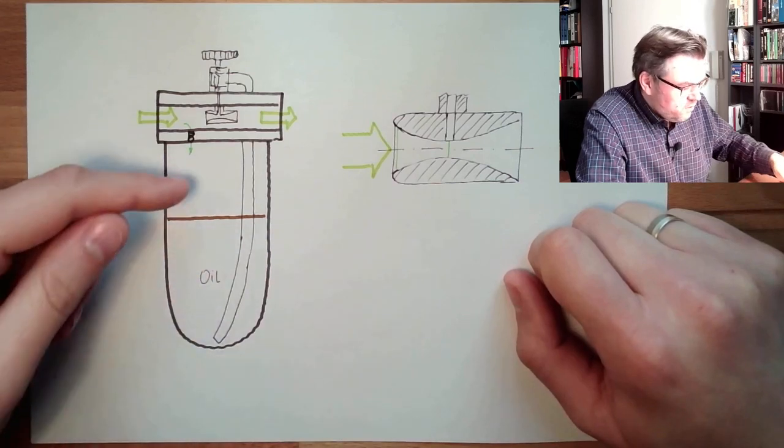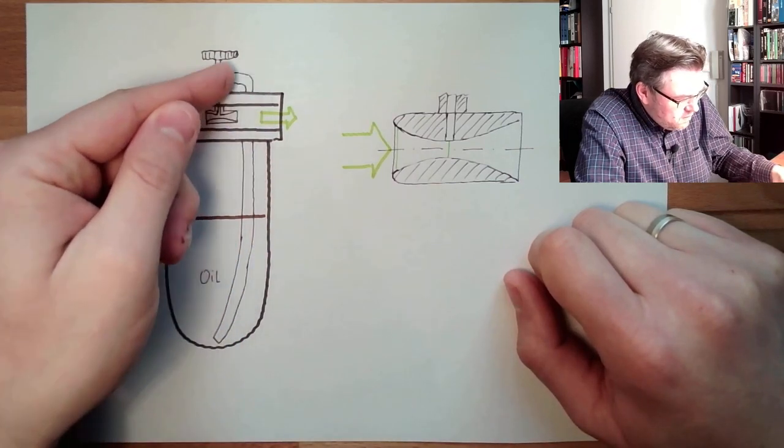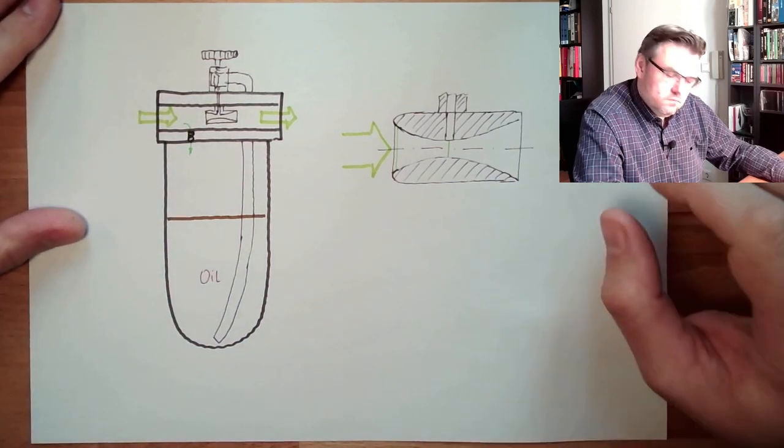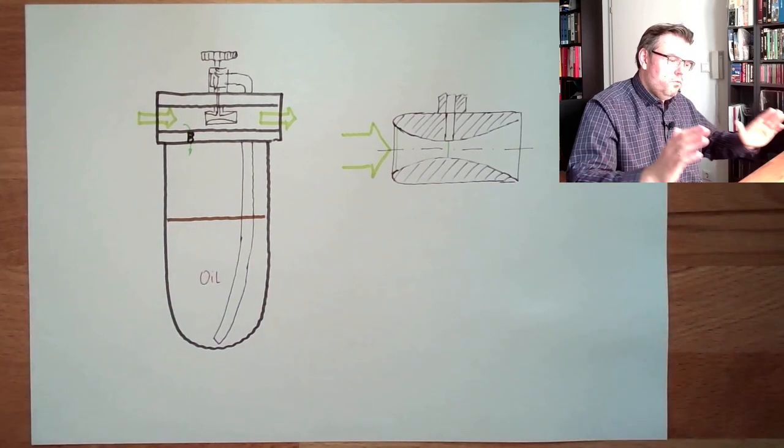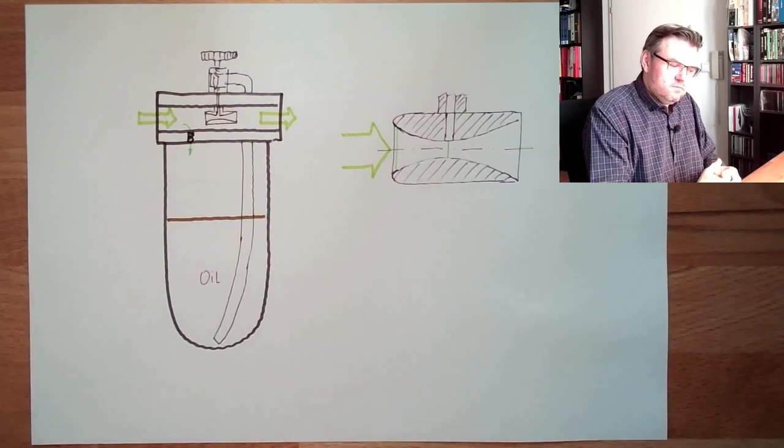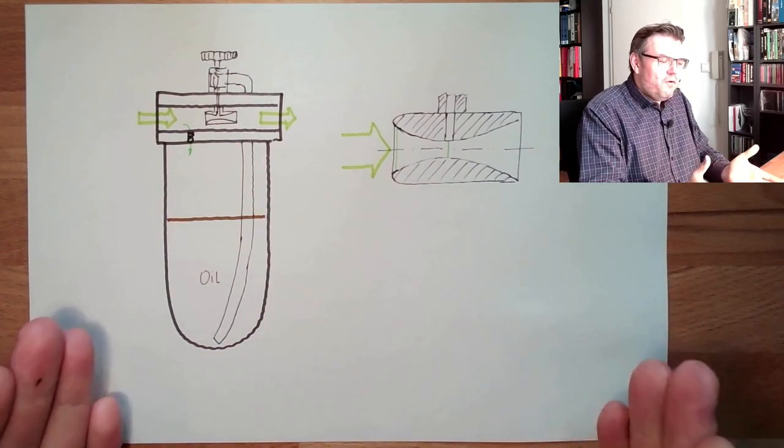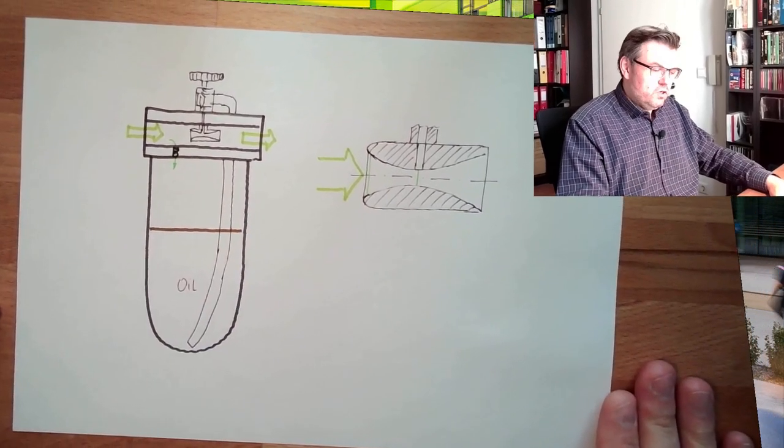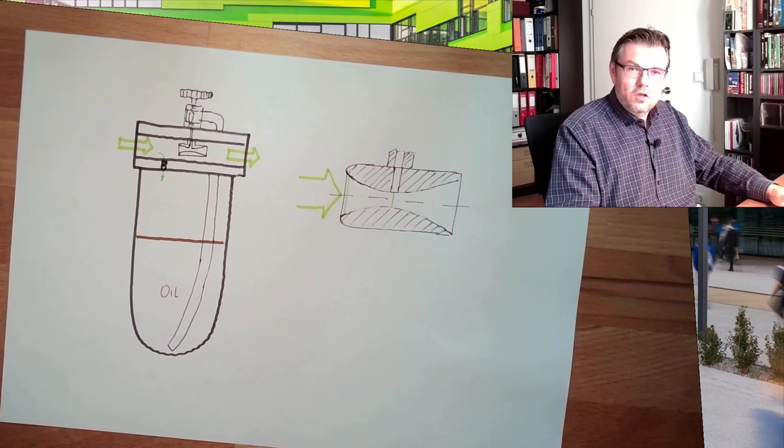Of course we need the energy to lift the oil. This energy is coming from the air itself. So there is no extra energy needed. We just take it from the process. This is how an oiler works. Venturi principle. Interesting thing. So oilers.